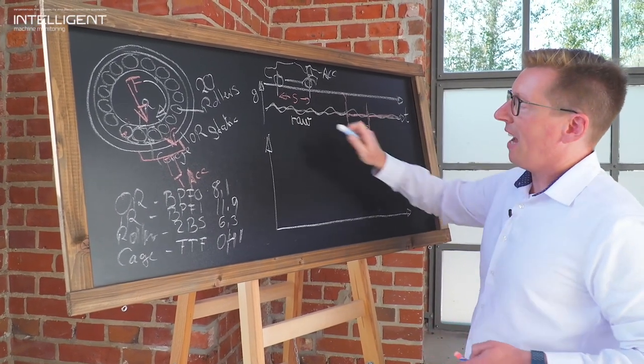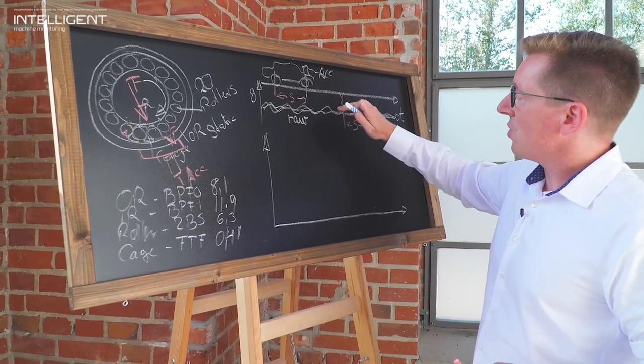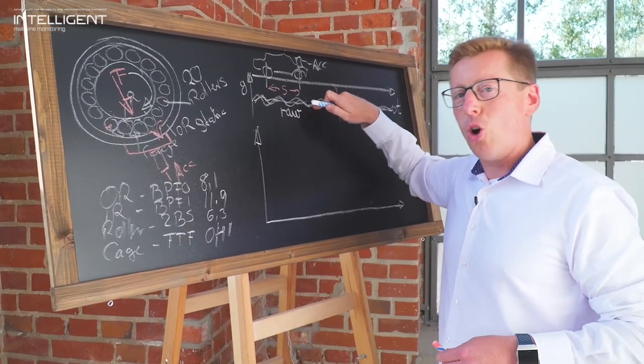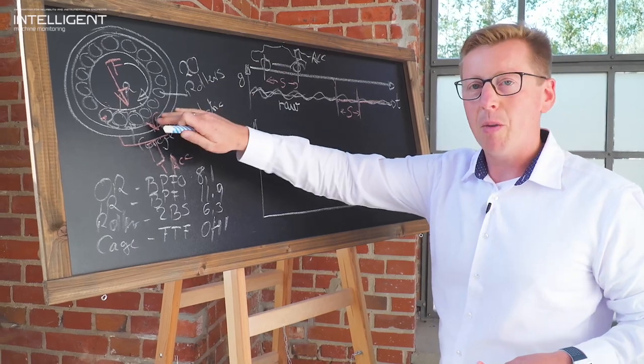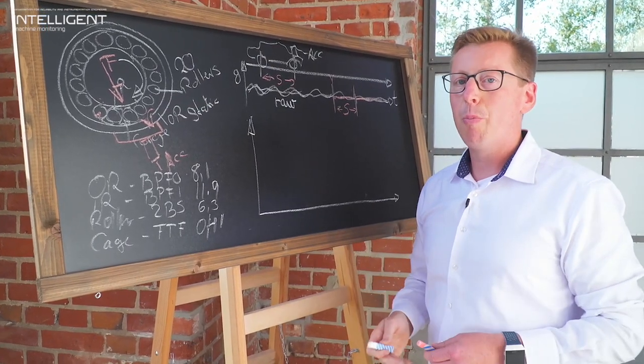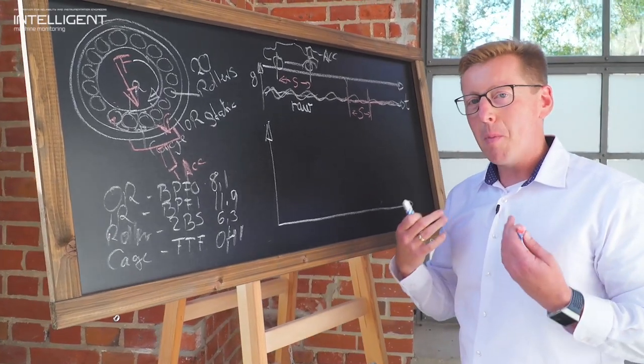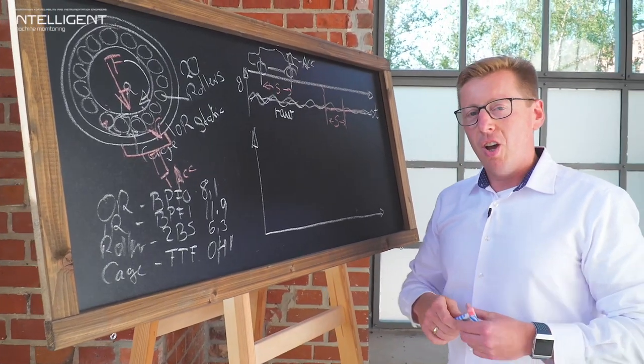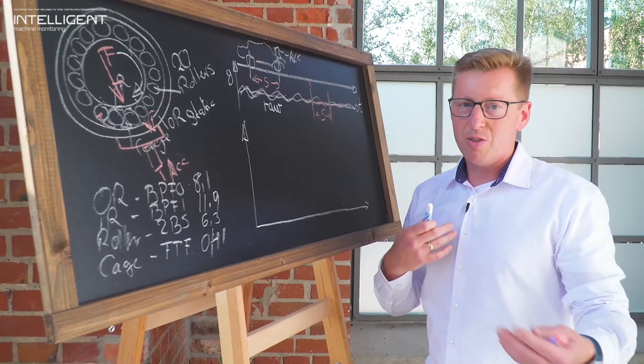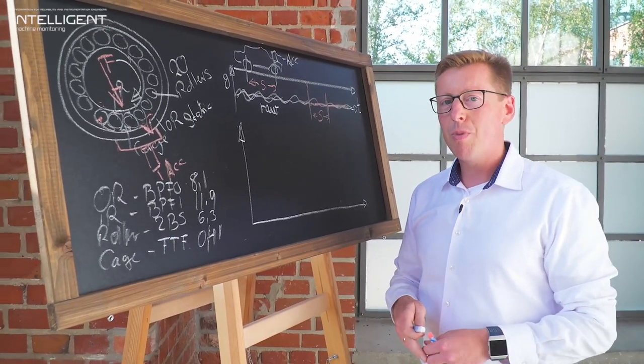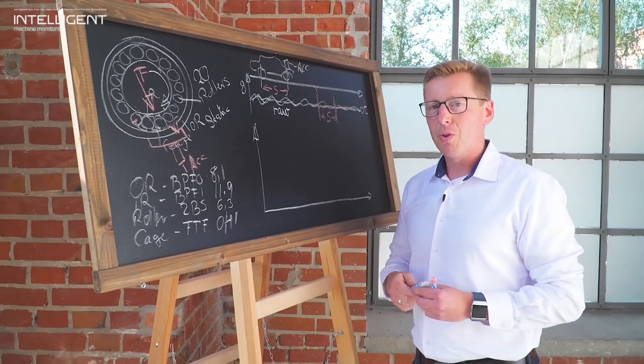This is a raw data or we say time waveform data to the time domain data and this vibration data that you see on top here contains all the vibration from the bearing but also from all other surrounding components which could be a noisy gearbox, could be an impeller of a rotating pump, could be a fan, could be the driving motor and could be the flow noise of the driven equipment.